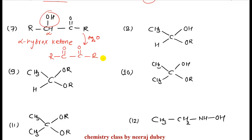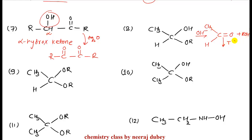Next example: here, OH and OR are attached to the same carbon, so this is a hemiacetal. Hemiacetals are formed in basic medium and can also break down in basic medium. If it breaks down, it will be converted to aldehyde plus alcohol. This aldehyde will react with both Tollens' and Fehling's, and therefore hemiacetals give a positive Tollens' and Fehling's test.